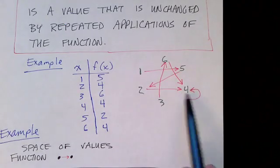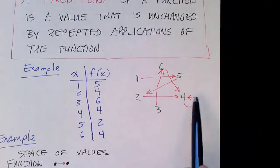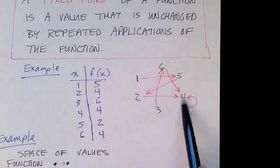Now in this example 4 is a fixed point. It's a value that is unchanged by repeated applications of the function.